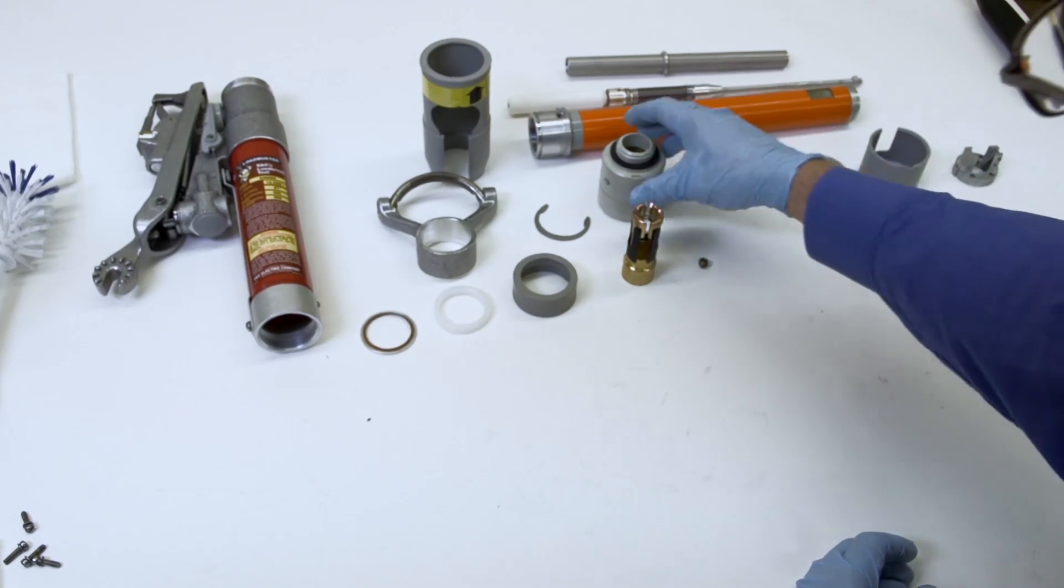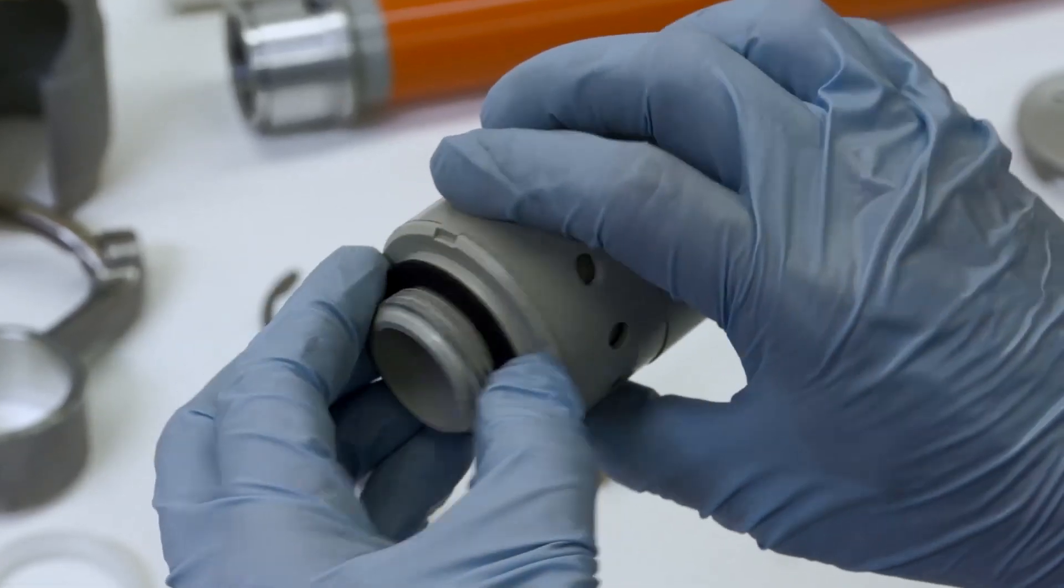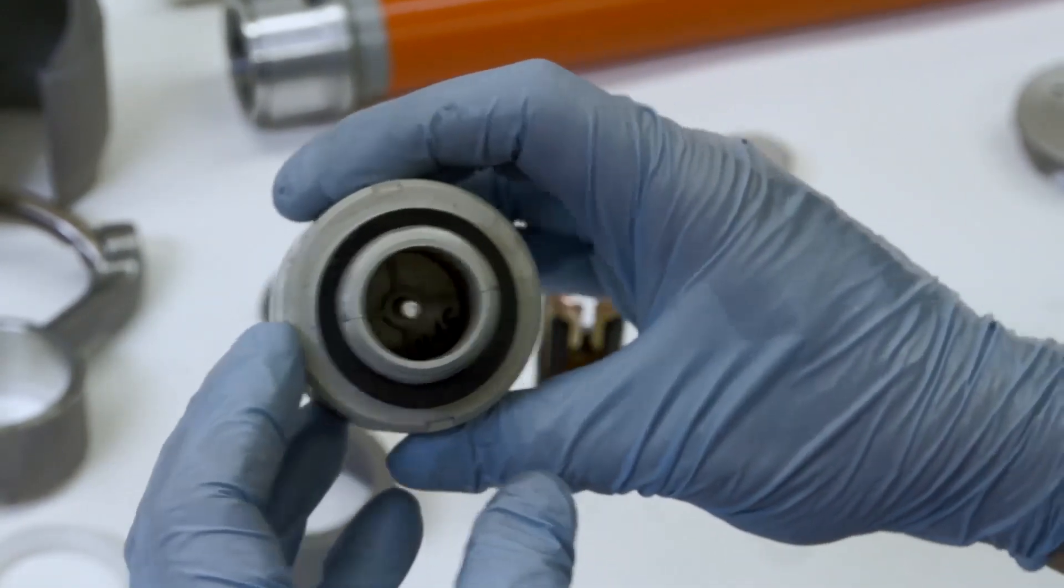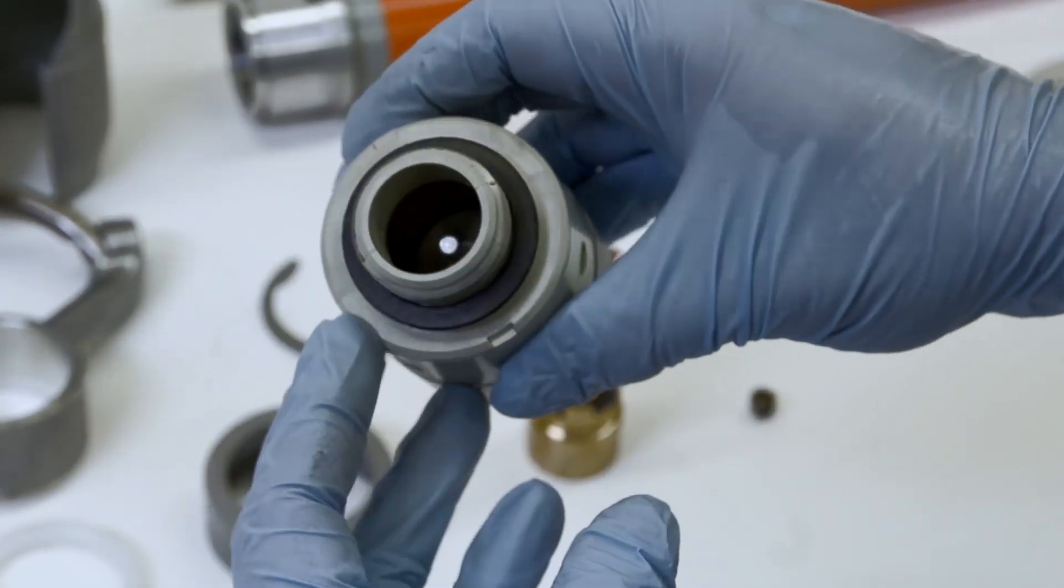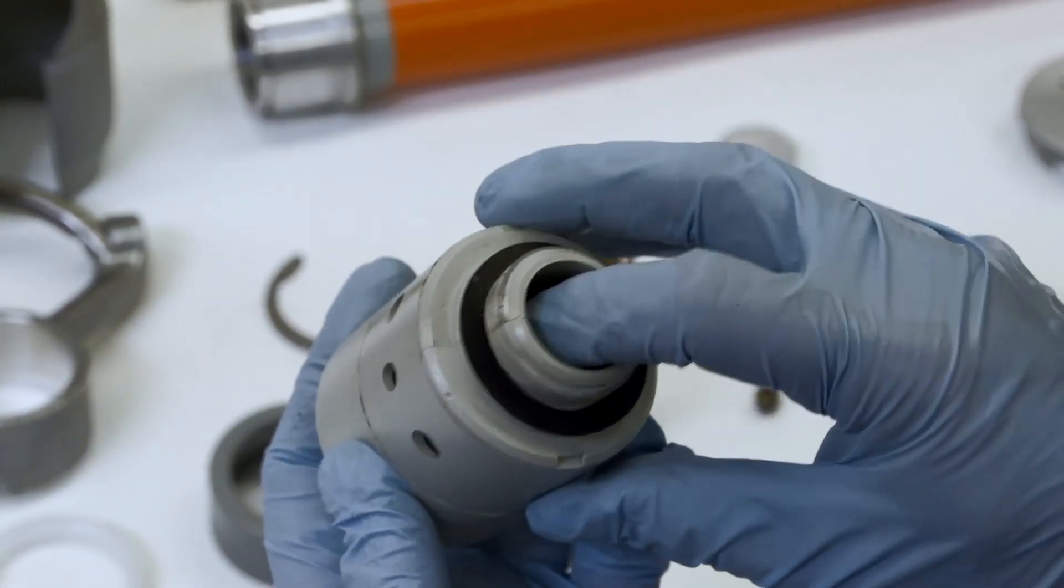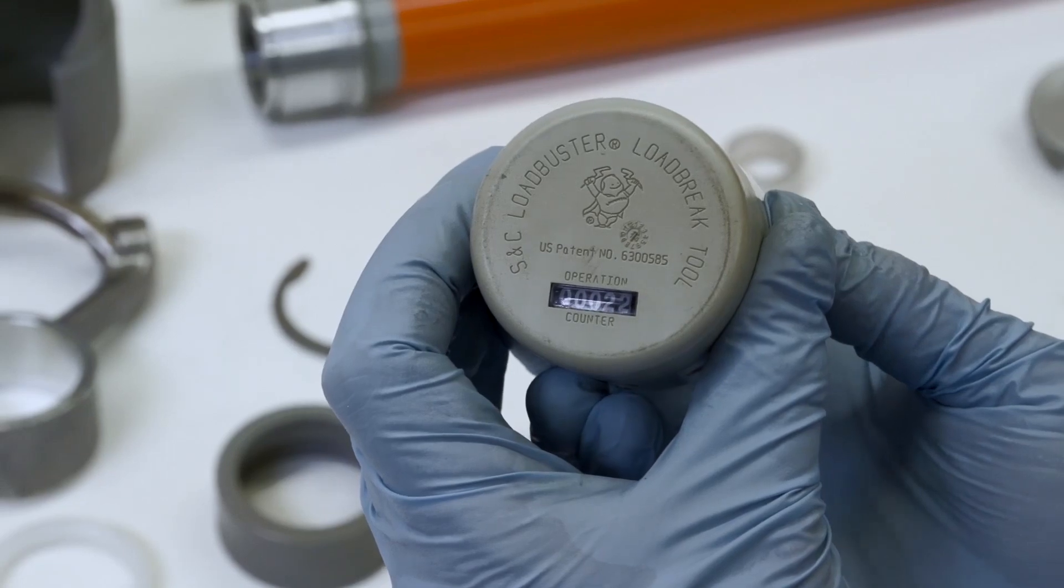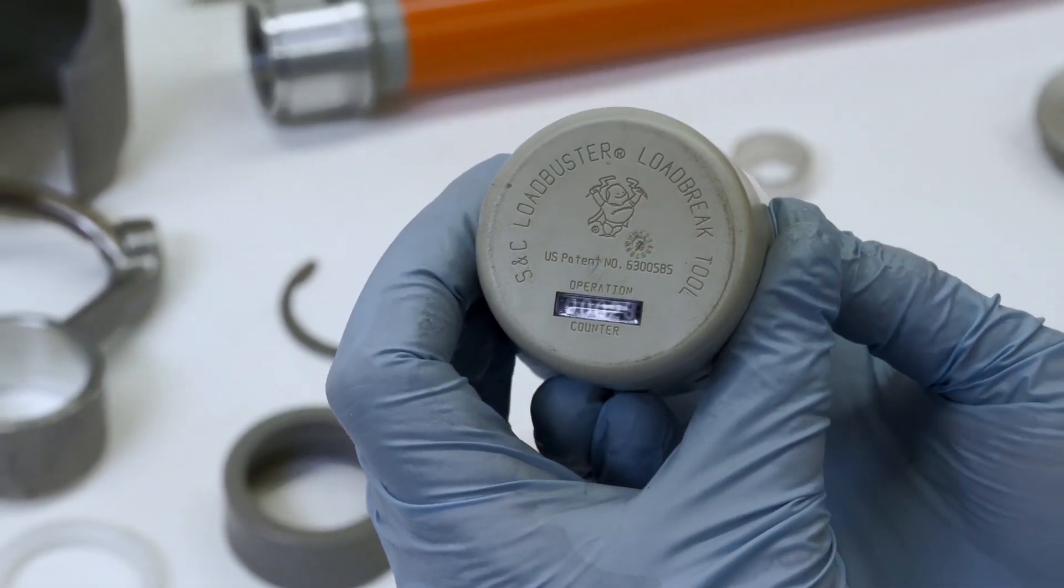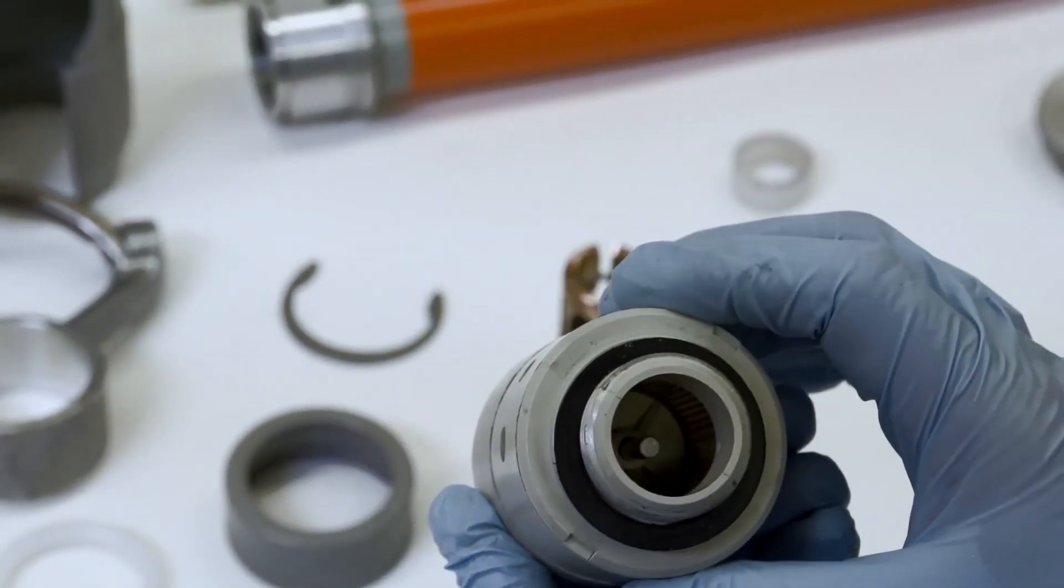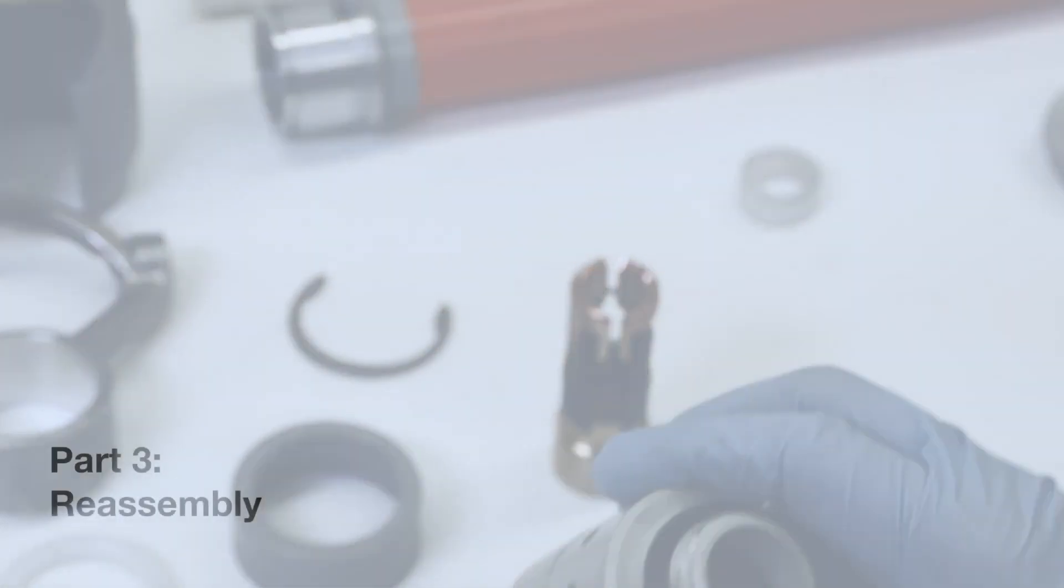Next, inspect the silencer to make sure the gasket, also called the silencer snubber, is in good condition. Look inside for evidence of corrosion or wear. Make sure the mesh is in good condition. Then push the pin to actuate the counter mechanism. Make sure the counter number advances each time the pin is pushed. This concludes the inspection of the Loadbuster Load Break Tool.